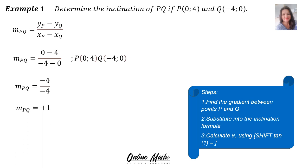Then into your inclination formula, tan theta equals m, you substitute your gradient. To work out theta, the inclination, you say shift tan 1 equals, and then your inclination is 45 degrees.